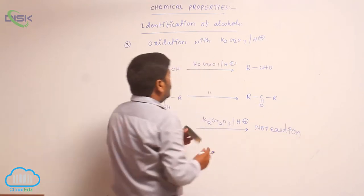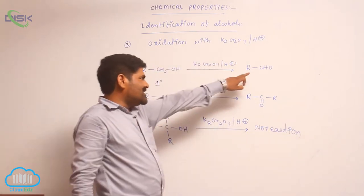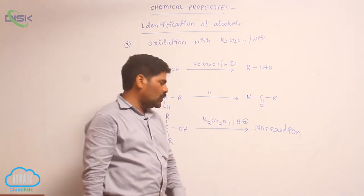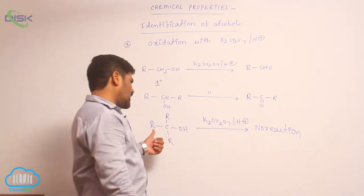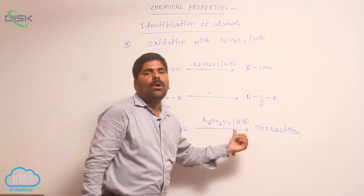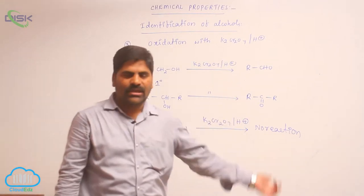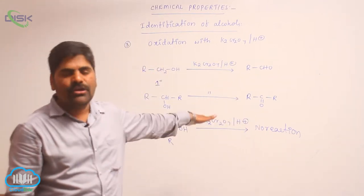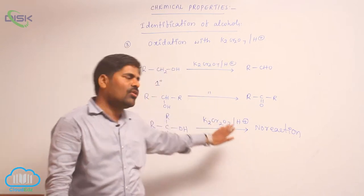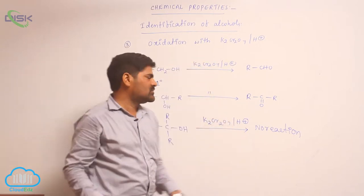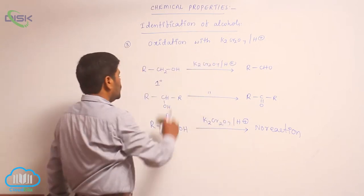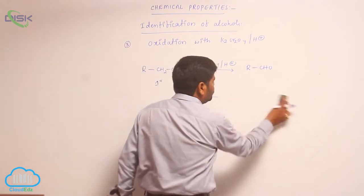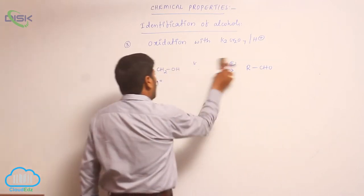So: a first-degree alcohol is oxidized into an aldehyde, a second-degree alcohol is oxidized into a ketone, and a third-degree alcohol shows no reaction with potassium dichromate. This allows us to separate first, second, and third-degree alcohols. This is the third identification test of alcohols.